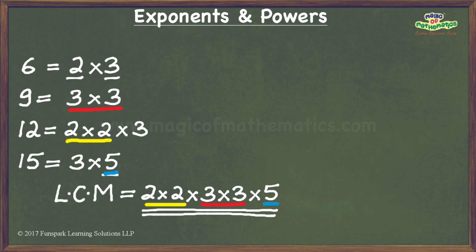This means that the least perfect square we are looking for has to be greater than the LCM. But since it also has to be exactly divisible by the given numbers — or in other words, since it is a common multiple of the given numbers — it has to be a multiple of the LCM. Hence, I will examine successive multiples of the LCM to see whether they are perfect squares, and once I get a perfect square, I will stop since I would have obtained the least perfect square that is exactly divisible by the given numbers.